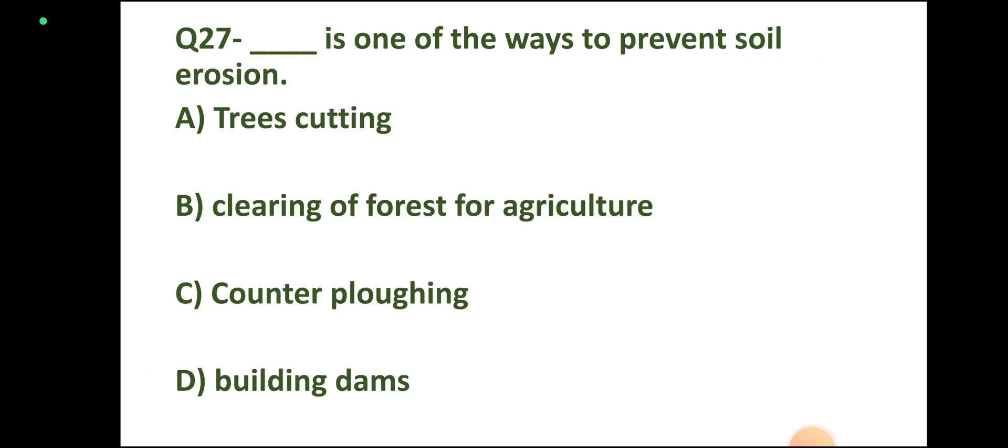Question 27: Which is one of the ways to prevent soil erosion? Options: trees cutting, cleaning of forest for agriculture, contour ploughing, building dams. Correct answer: contour ploughing.